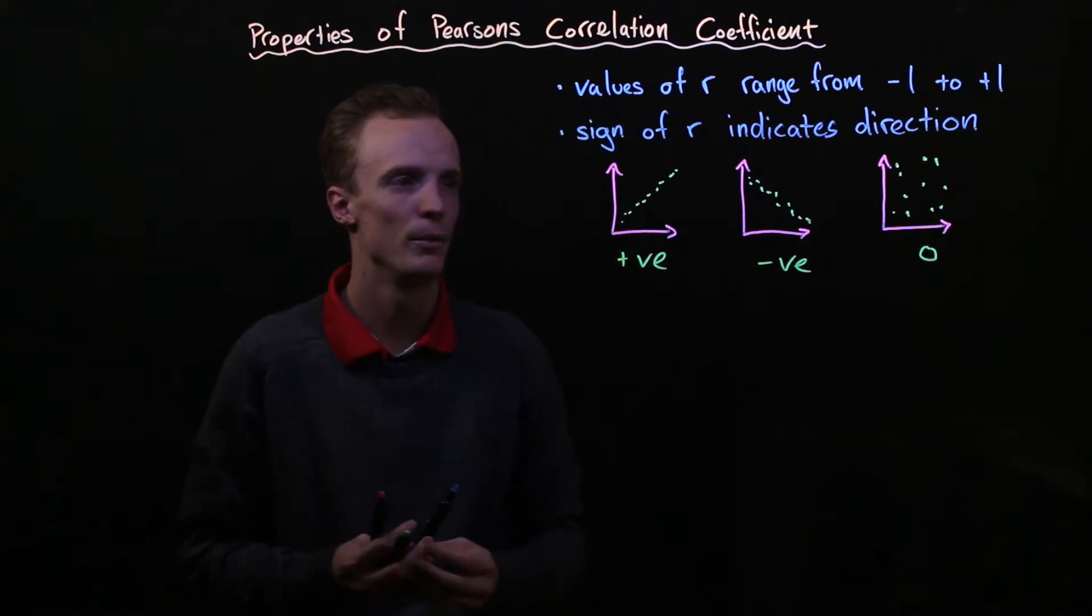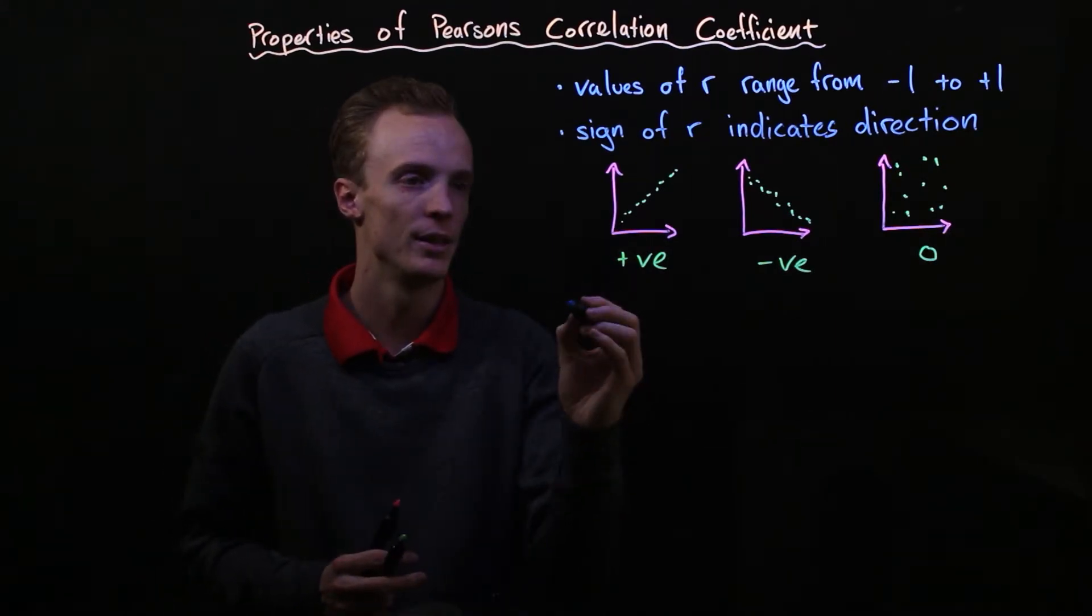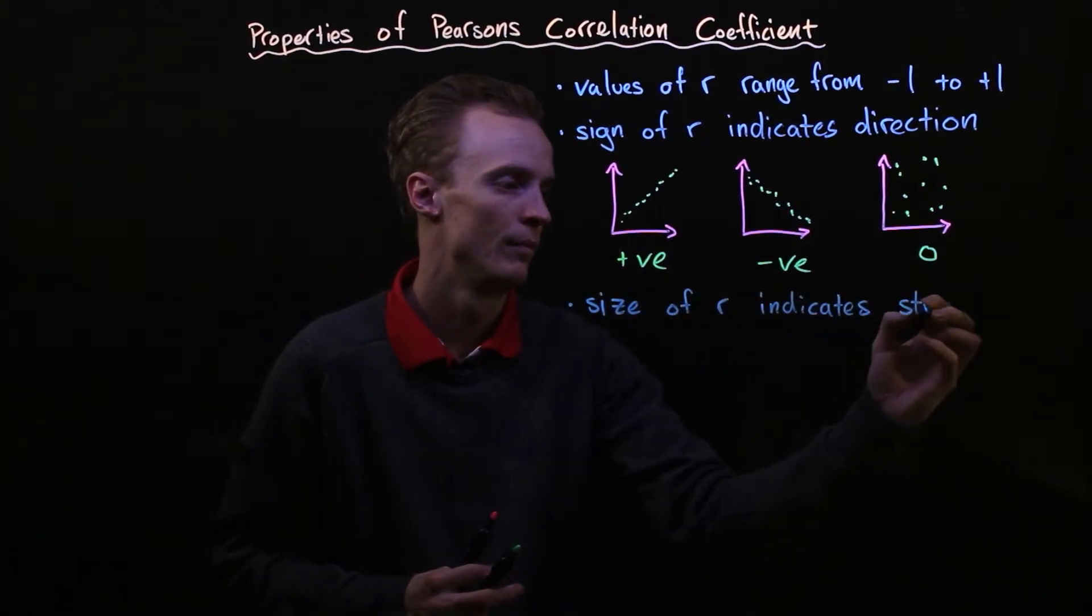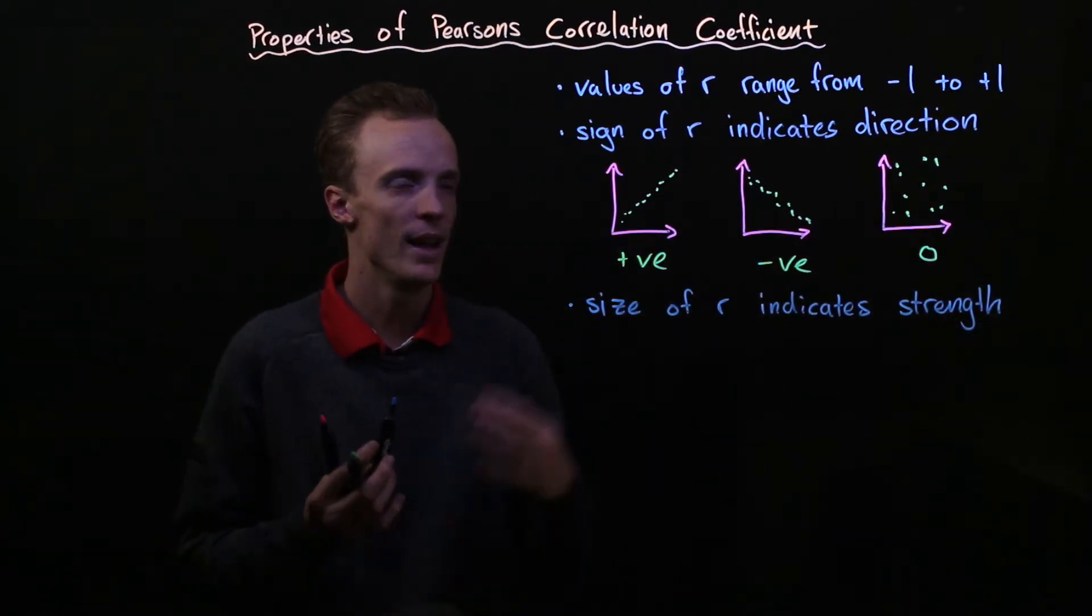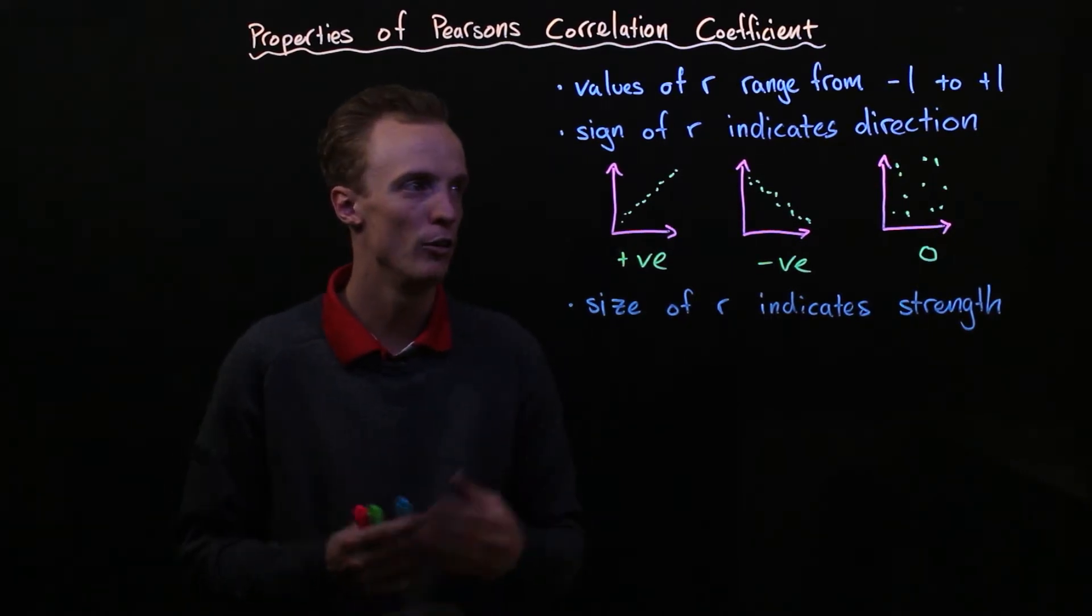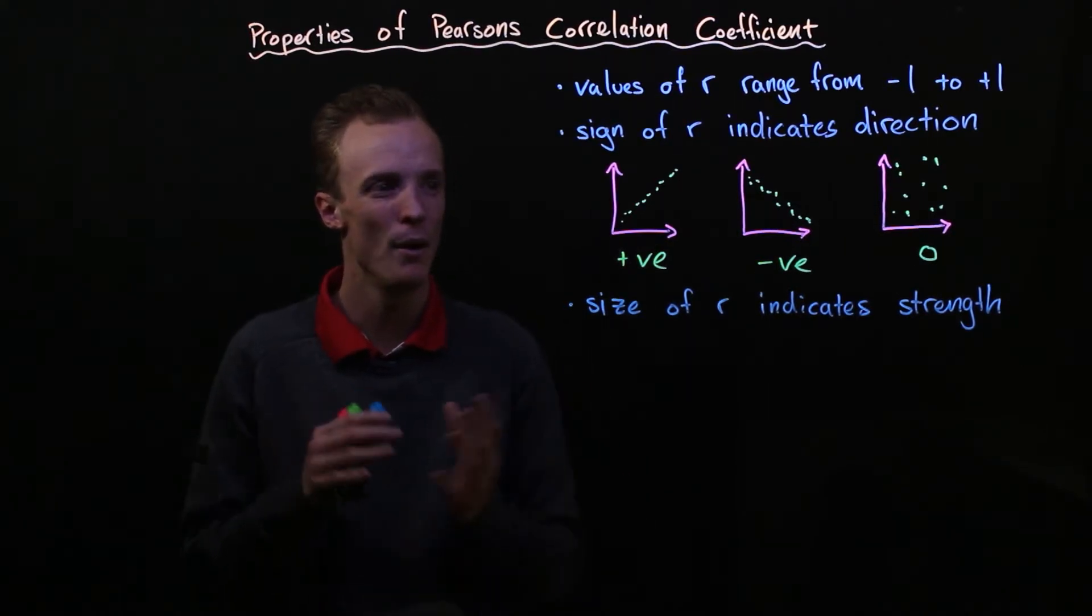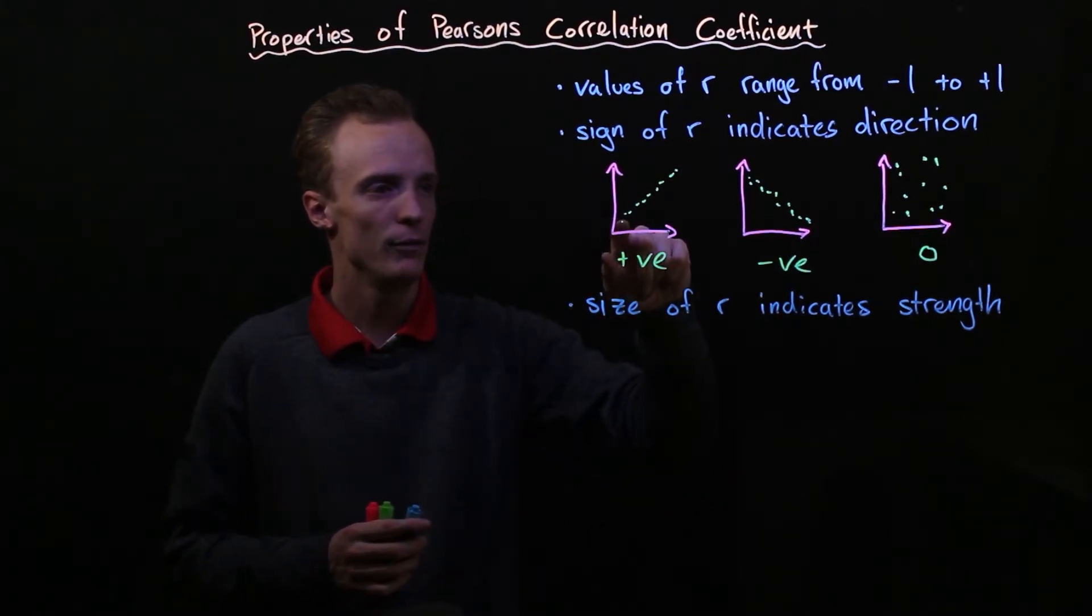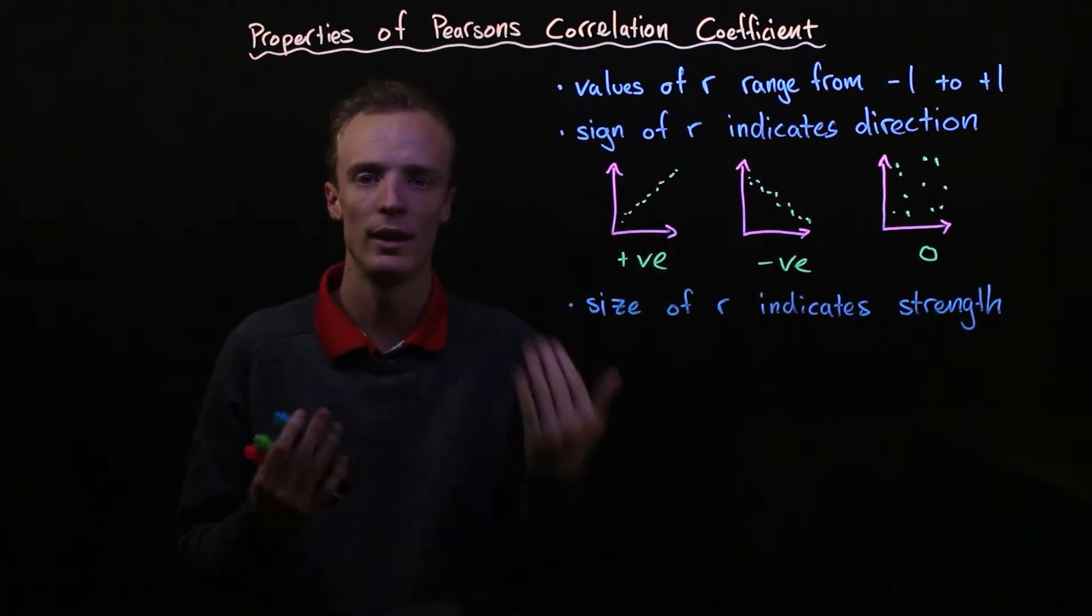Now the other important property of Pearson's correlation coefficient is its size, and its size tells us the strength of the relationship between our two variables. For example, if we were to have a value of positive one or negative one, we would say that there is a perfect, absolutely perfect correlation between our two variables. That would mean that every dot on that data point fit to a single linear line.